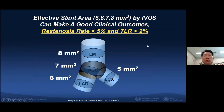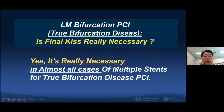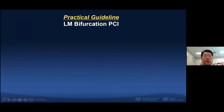Restenosis less than 5% and TLR less than 2%. So in case of a true bifurcation, is final kissing balloon inflation really necessary? Yes — it is really necessary in almost all cases of two-stent technique for true bifurcation disease PCI.